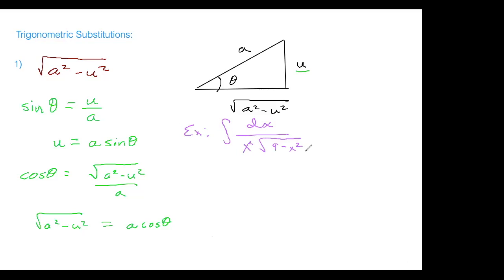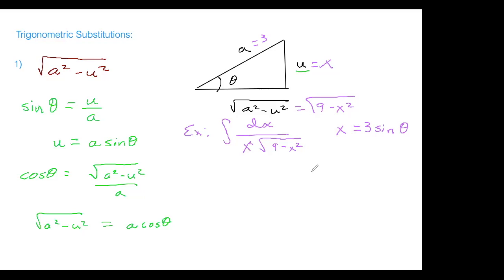In this case, a = 3 because the square root contains 3² minus x², and u = x. Filling in the triangle for our particular integral, we get that u = x equals 3 sin θ. We also know that √(9 - x²) = 3 cos θ.